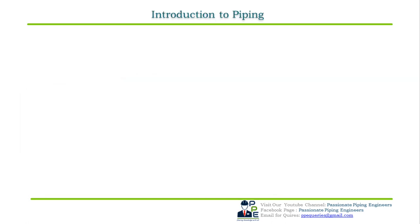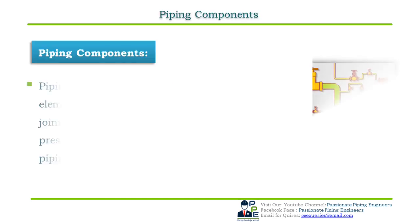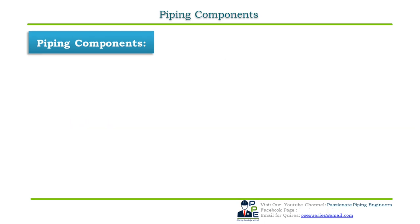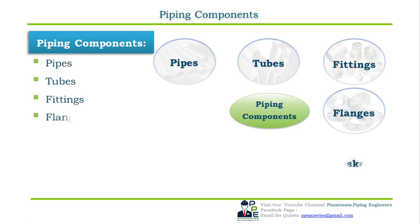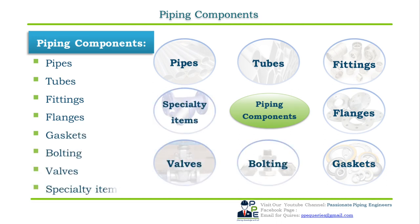Now let's see what pipe fittings are, which are one of the piping components. But what are piping components? Piping components are mechanical elements which are suitable for joining or assembling pipes into a pressure-tight, fluid-containing piping system. Piping components include pipes, tubes, fittings, flanges, gaskets, bolts, valves, and specialty items.